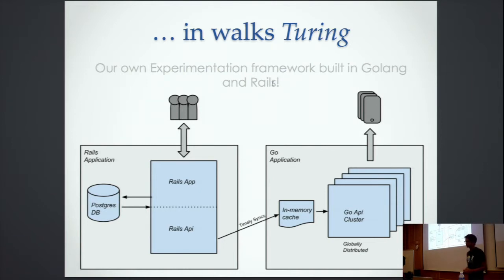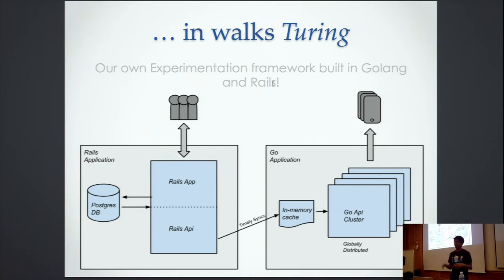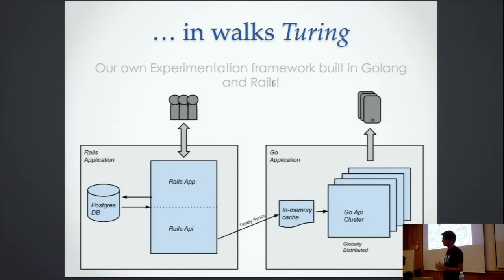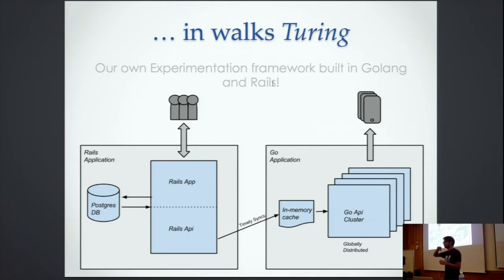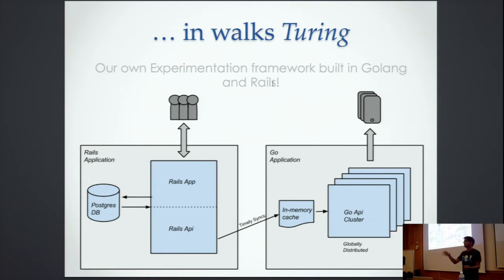So we built something — we call it Turing. This is the broad-level architecture. It's in two parts: one part is the Go application and the other part is the Rails application. The Go application is basically for the API. The Rails application is for the admin interface, where your product manager can go in and set these experiments. The Go application is deployed on about eight clusters around the world and does timely syncs with the database that's based on the admin interface, so if you change an experiment, that will eventually be synced to the Go application.